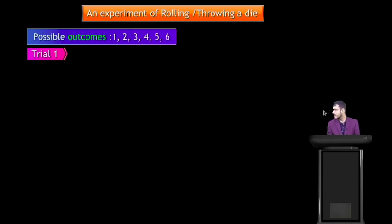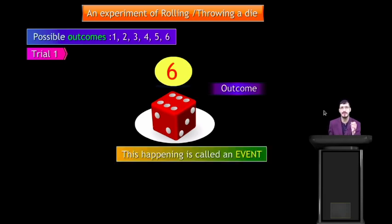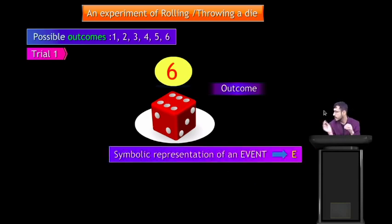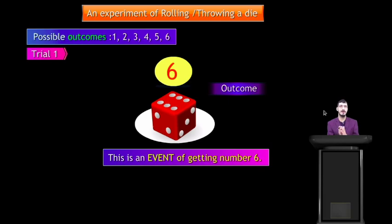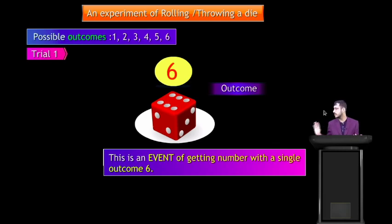In Trial 1, when we are throwing a die, you can see an outcome — this happening is called an event. The symbolic representation of an event is E. This is an event of getting number 6, with a single outcome of 6.